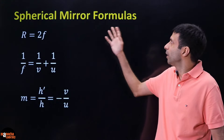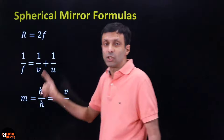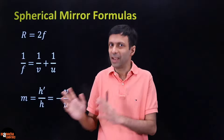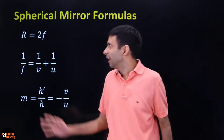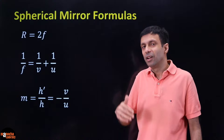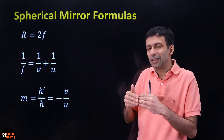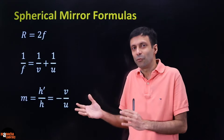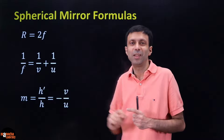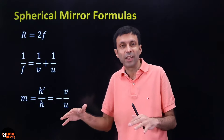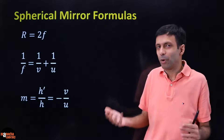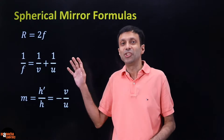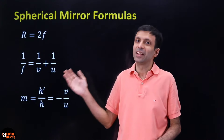Let's do a recap on spherical mirror formulas. Spherical mirrors means curved mirrors. There are two types: concave and convex mirrors. These formulas can be used to predict where an image will be formed when you place an object at a certain distance in front of a spherical mirror with a known focal length - without drawing a ray diagram.